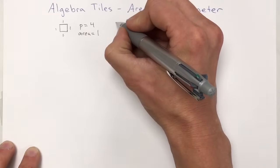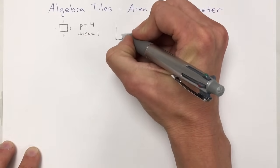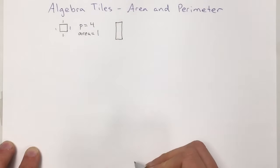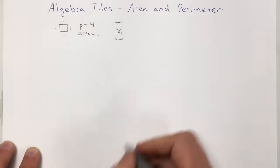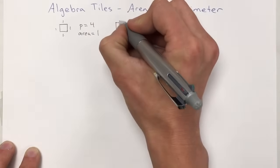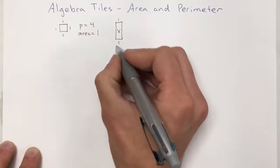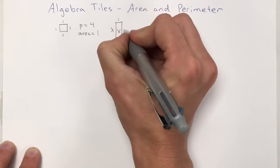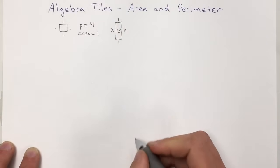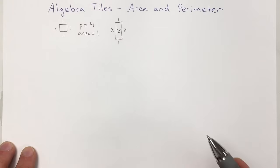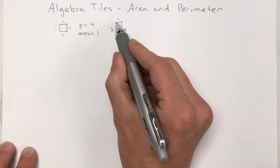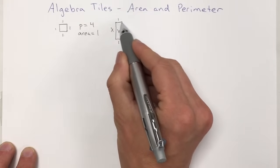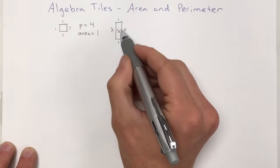You'll also see a slightly longer rectangular shape in algebra tiles. This one often has an x inside it, meaning the value at the bottom and top — the width — is one, and the value of the sides is x. It's a little confusing because x is just an unknown value. On graph paper, the width lines up with exactly one, but the side is not quite one.